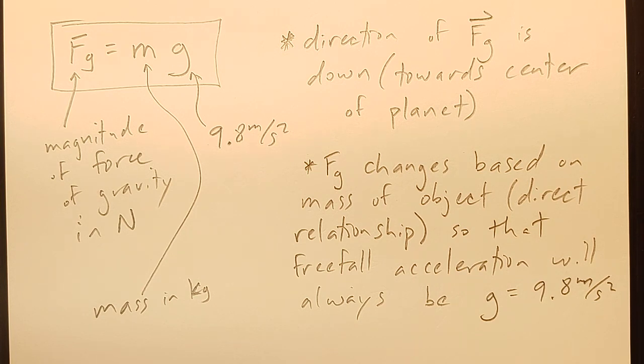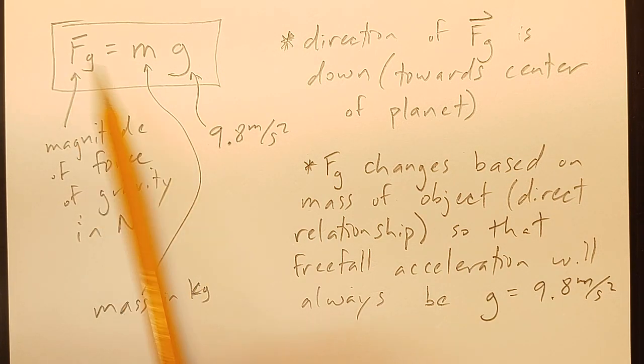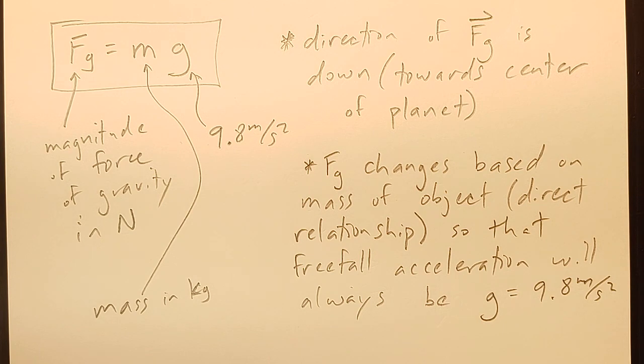And so we can use that in our problem solving now. If we know the force of gravity, we can figure out the mass. Or if we know the mass, we can figure out the force of gravity. Or maybe in some sort of weird problem, we're on a different planet. And we don't know g. We don't know what the local free-fall acceleration is because we're on the moon or Mars or something. Well, if we're somehow able to figure out the mass and the force of gravity, we could even figure out what g is for whatever planet we are on.